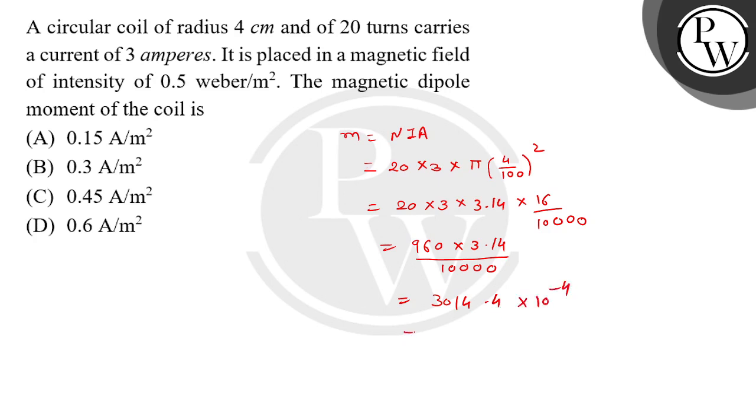Okay, now if you round off this and if you reduce the power of 10, so you'll get 0.3 ampere per meter squared.